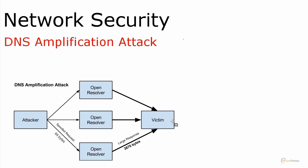The DNS reply will go to the victim, not the attacker. The goal is to send as much information as possible to the victim — that's the denial-of-service. It's really dangerous because if you block the source IP address, you'll be blocking a DNS server and not the actual attacker, since the packets are coming from a DNS server.